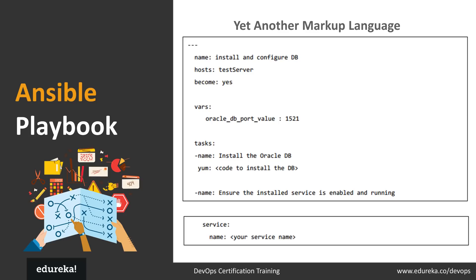Ansible playbooks are files where Ansible code is written in YAML format. YAML stands for Yet Another Markup Language. Playbooks are one of Ansible's core features — they act like a to-do list containing tasks for Ansible to execute on particular machines, running sequentially. Each playbook is an aggregation of one or more plays, and each play maps a set of instructions to a particular host. Playbooks are the building blocks for all Ansible use cases.